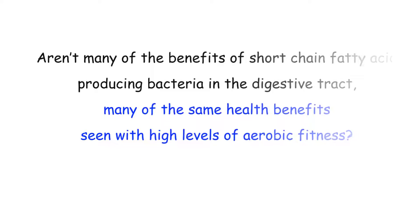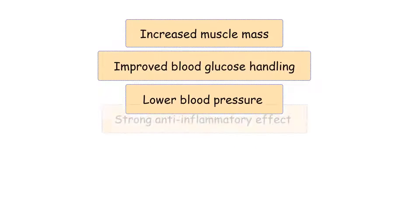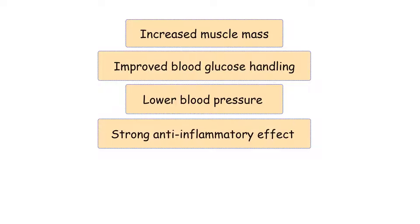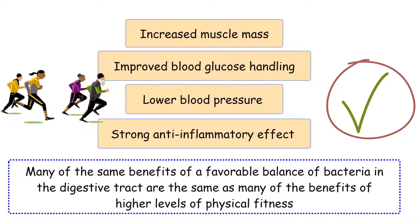The immune-boosting story doesn't end there. Short-chain fatty acids can also cause the production of antimicrobial proteins and lower the pH of the digestive tract, creating an inhospitable environment for pathogenic bacteria. Many of the benefits of short-chain fatty acid-producing bacteria — including increased muscle mass, improved blood glucose handling, lower blood pressure, and a strong anti-inflammatory effect — are the same health benefits seen with high levels of aerobic fitness. Research has confirmed that many of the same benefits of a favorable balance of bacteria in the digestive tract mirror those of higher levels of physical fitness.